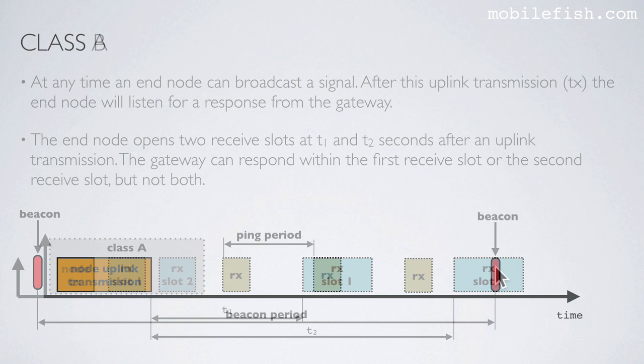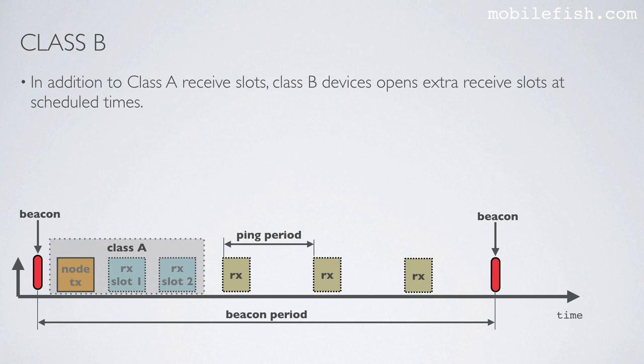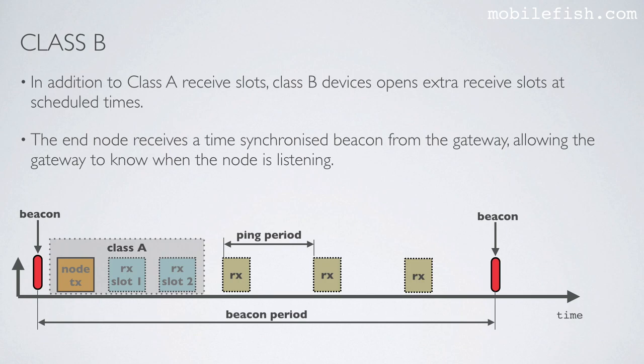Now let's look at Class B devices. In addition to Class A receive slots, Class B devices open extra receive slots at scheduled times. As you can see, Class B devices also incorporate Class A behavior with its standard two receive slots, and here are the extra receive slots opened at scheduled times. The end node receives a time-synchronized beacon from the gateway, allowing the gateway to know when the node is listening.